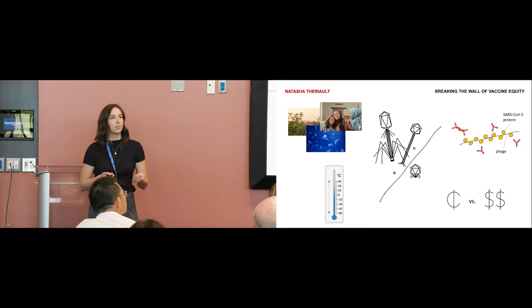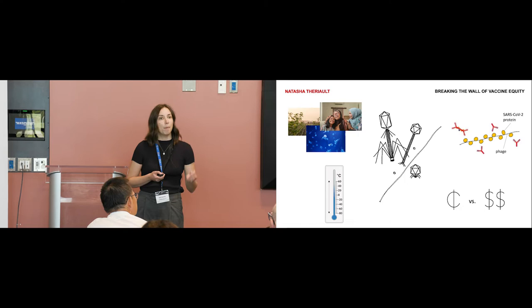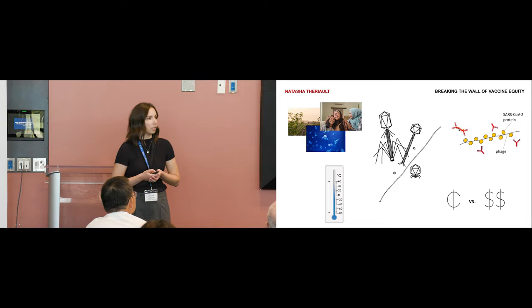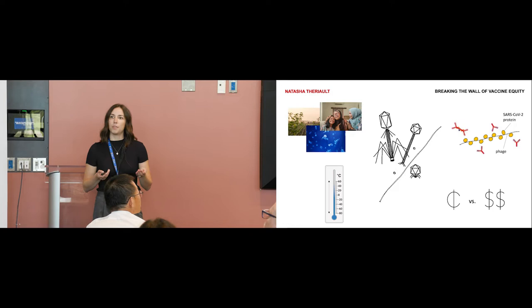More equitable vaccines can be created through the use of phages or bacterial viruses, the natural predators of bacteria. They are actually the most abundant biological entities on this planet and occupy nearly every ecological niche, including the human body.